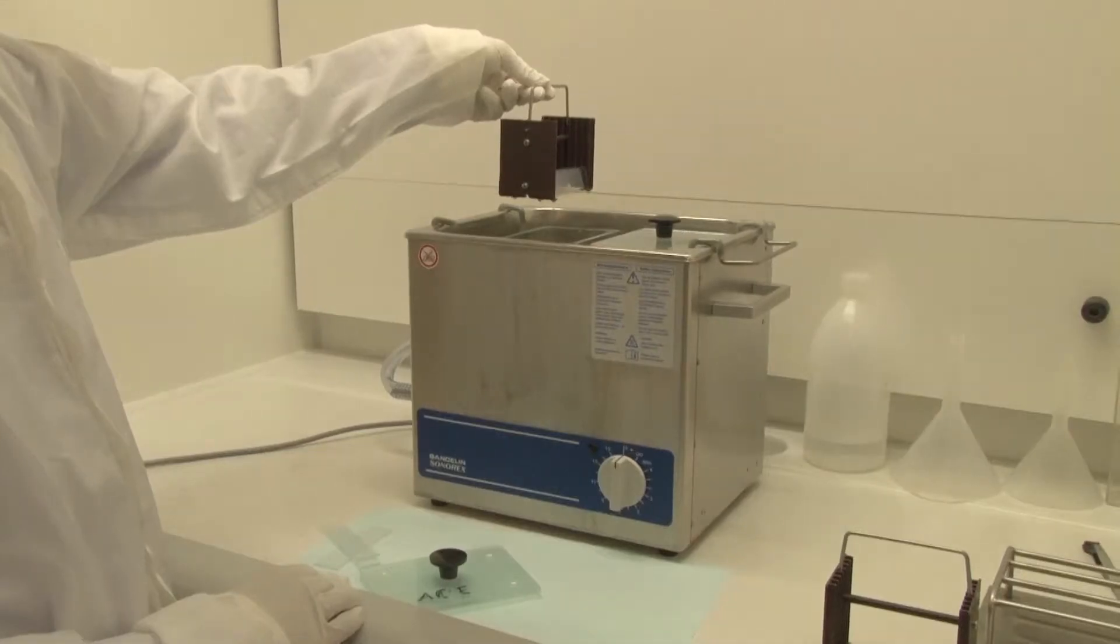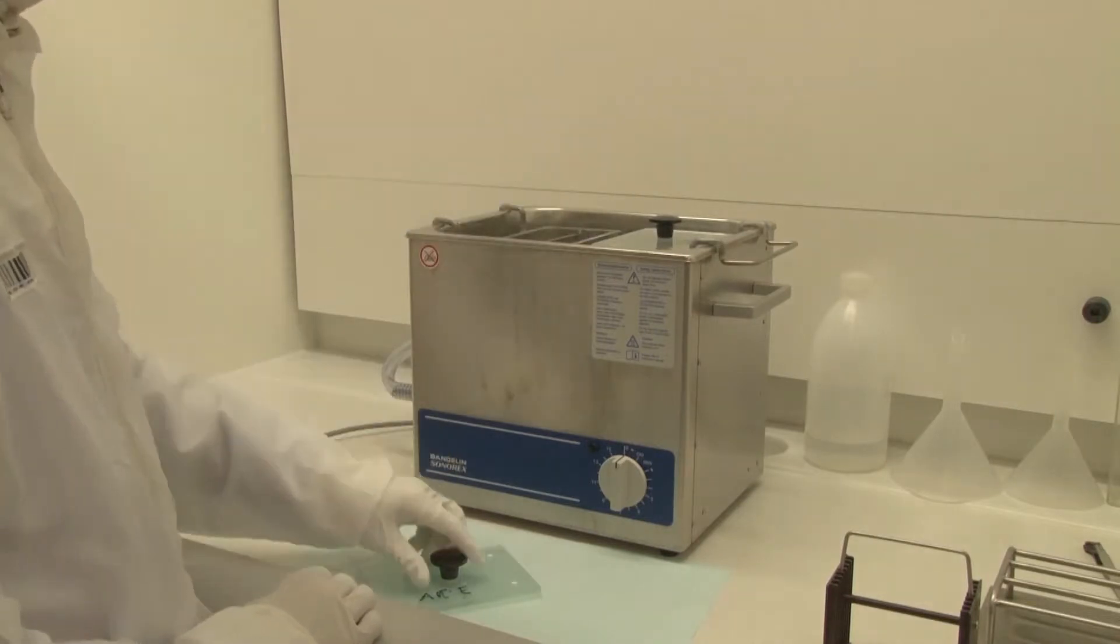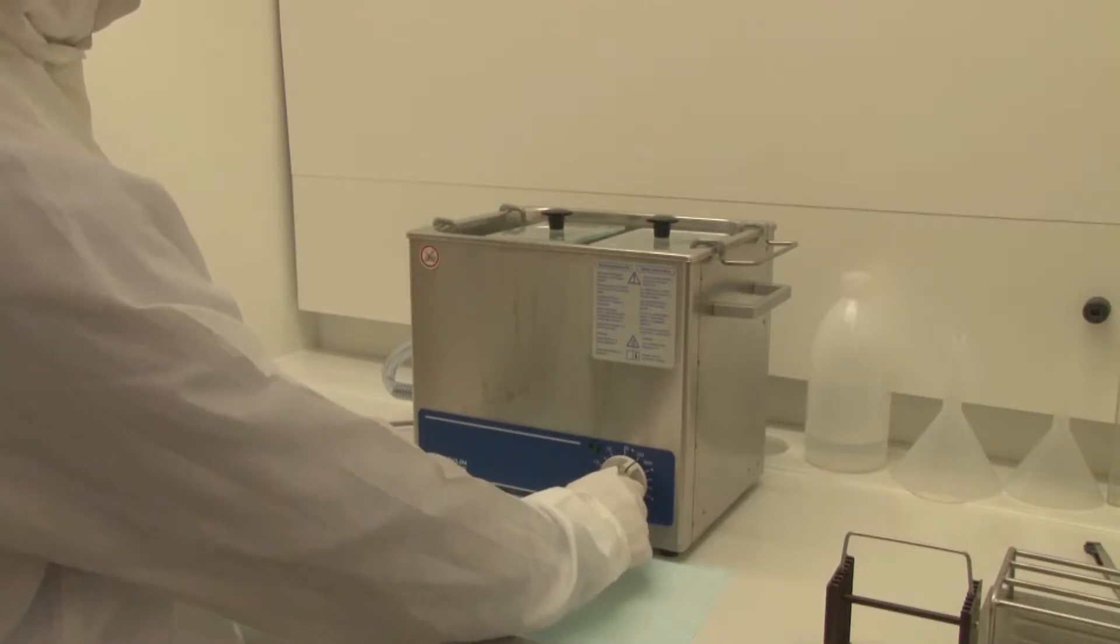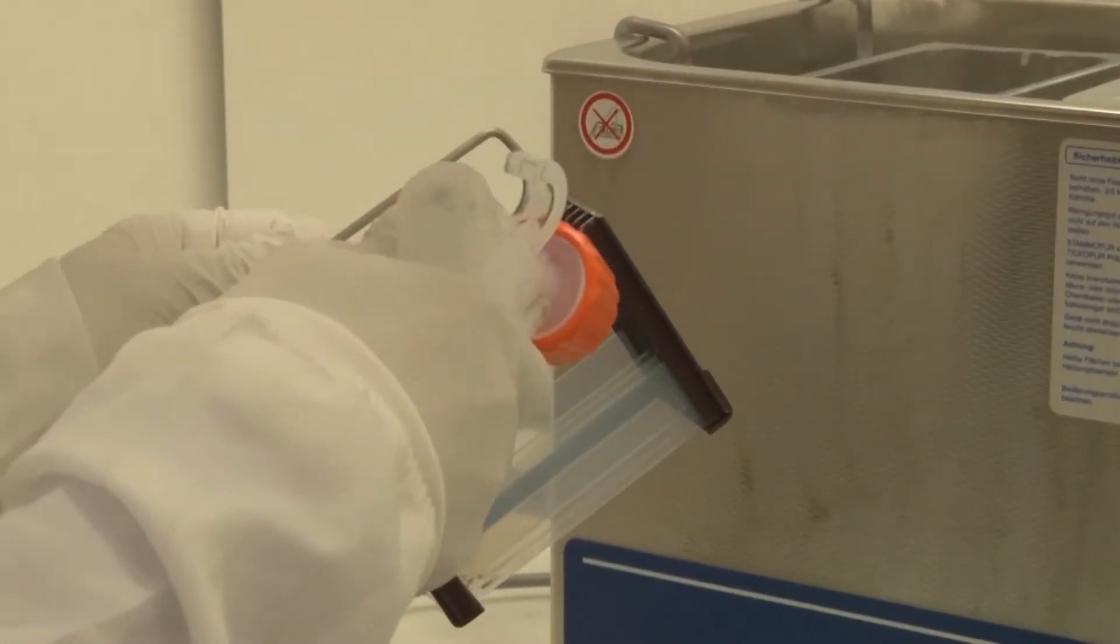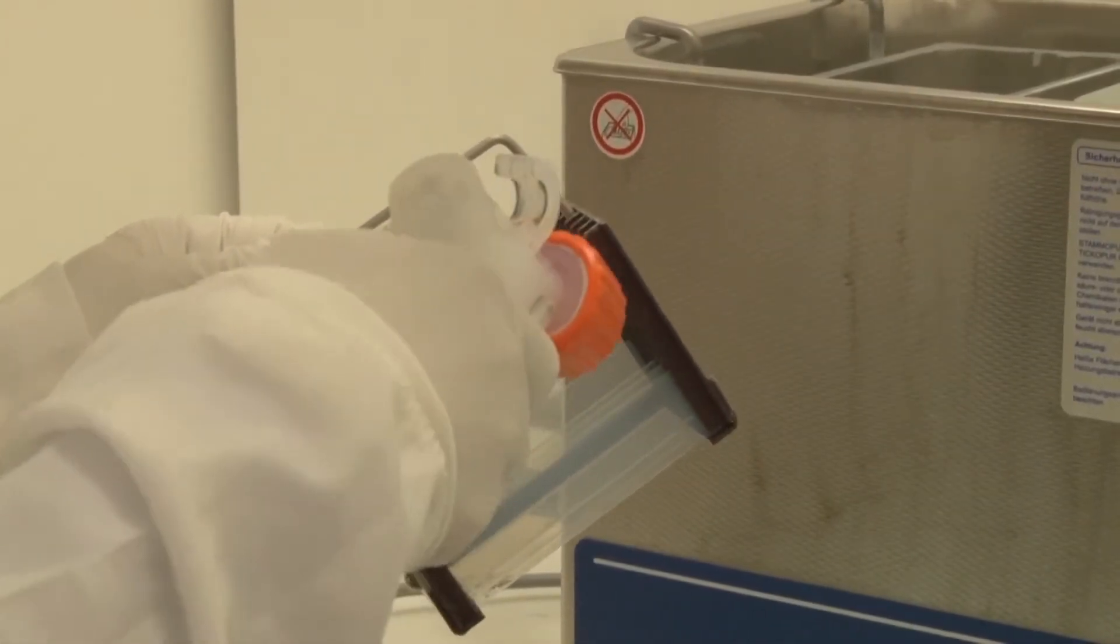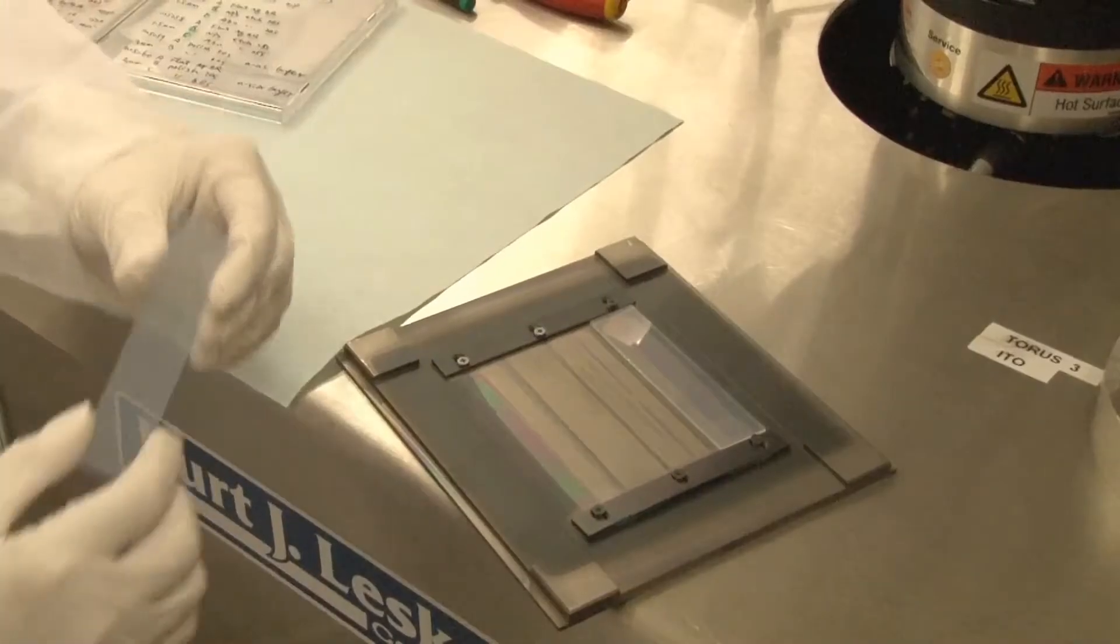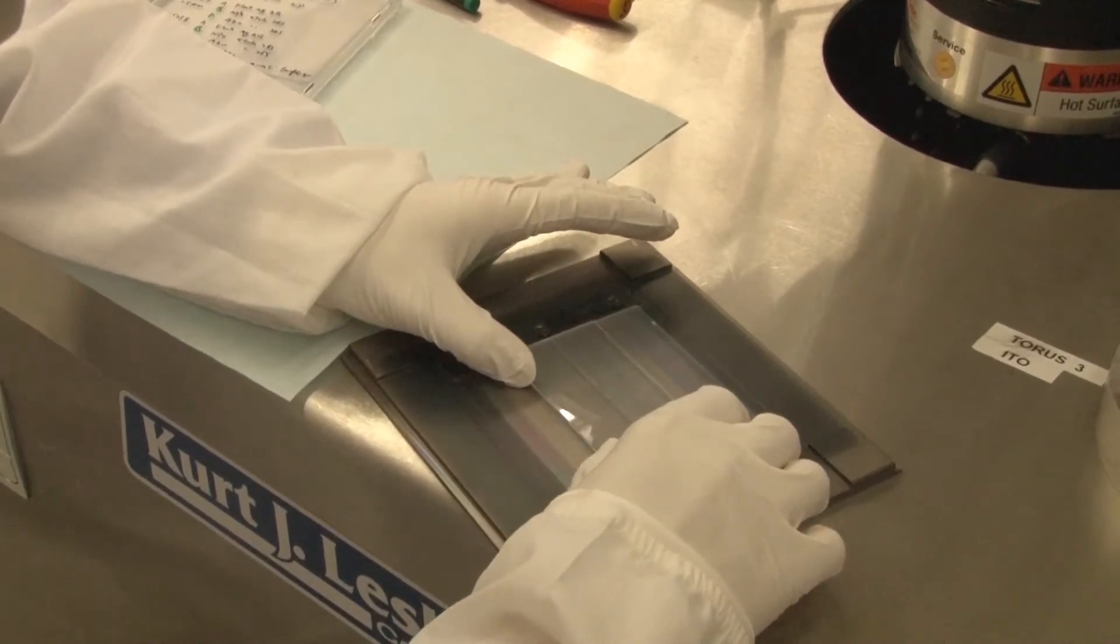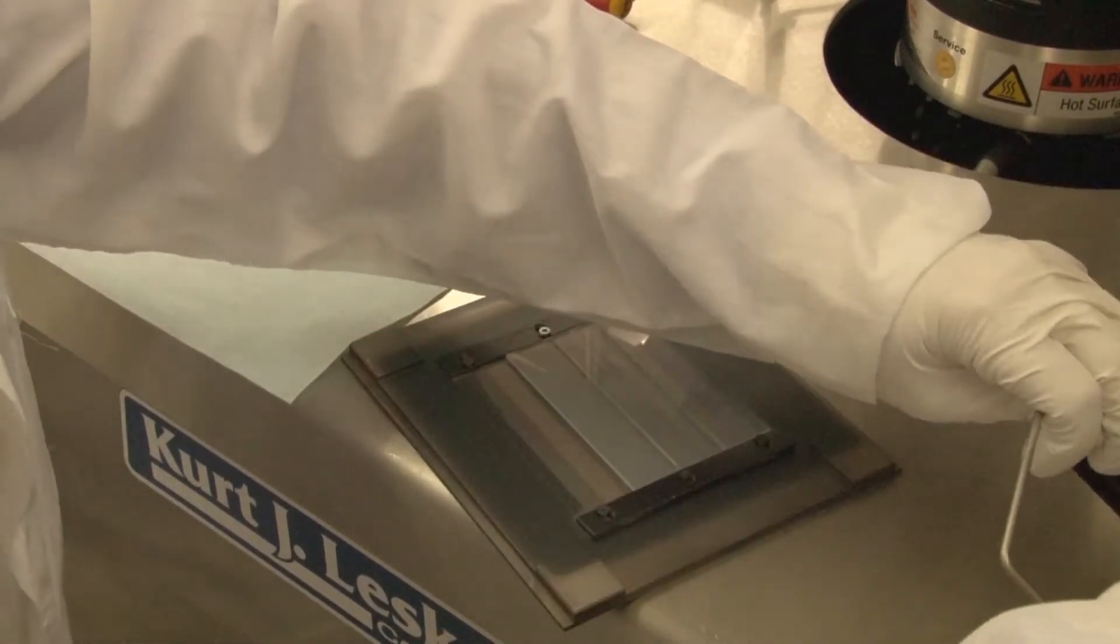Before deposition, the samples have to be cleaned in a so-called ultrasonic cleaning bath. The potential dirt and dust particles are removed. Since a solar cell device is only several hundreds of nm up to a few microns thick, a dust particle on the substrate will generate a shunt between the front and back contact in the final solar cell.